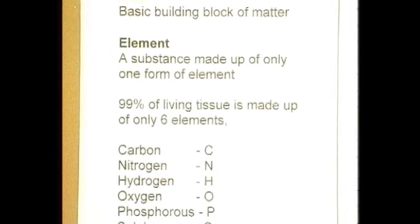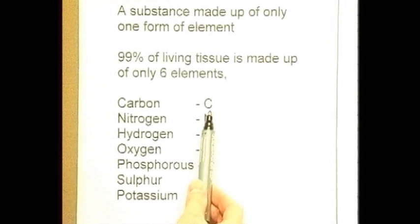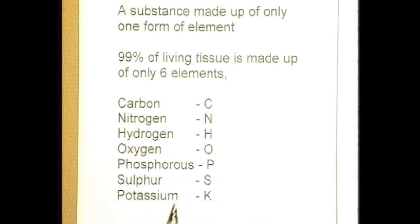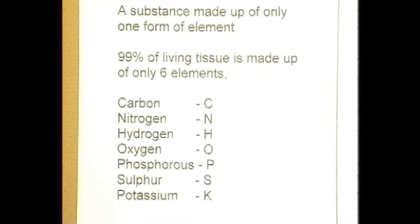All the elements have symbols that represent them: C means carbon, N means nitrogen, H means hydrogen, O means oxygen, P is phosphorus, S is sulfur. They're all the English letters, but sometimes it's a bit confusing because the letter is taken from the Latin term — and K is the chemical symbol for potassium.